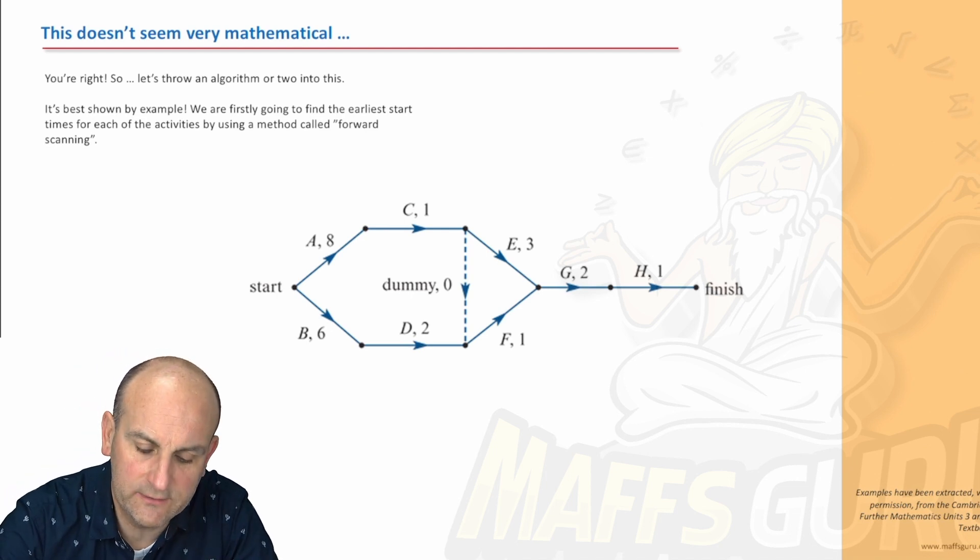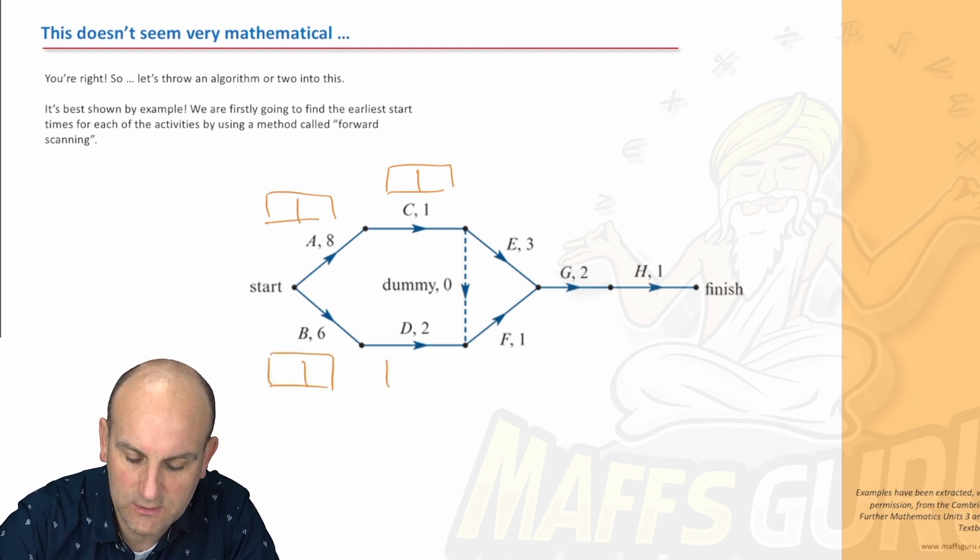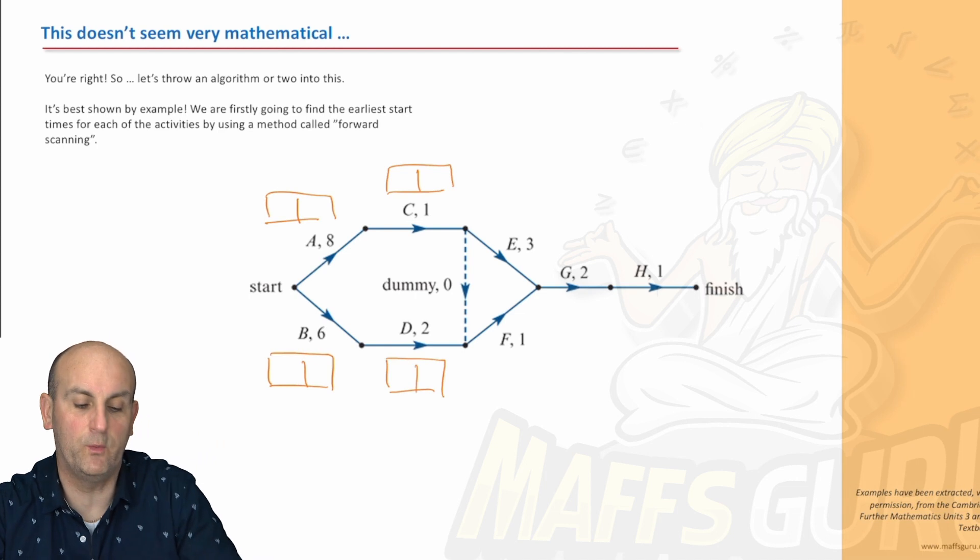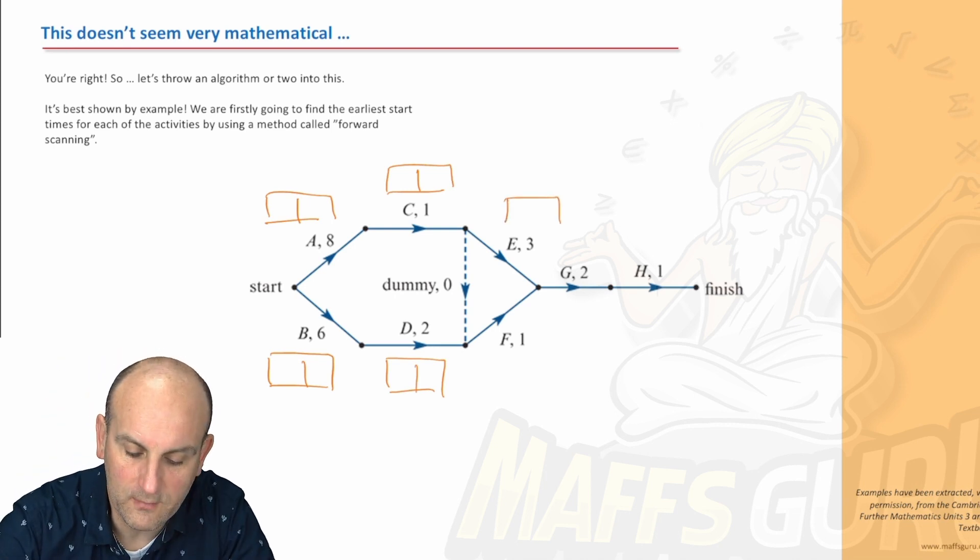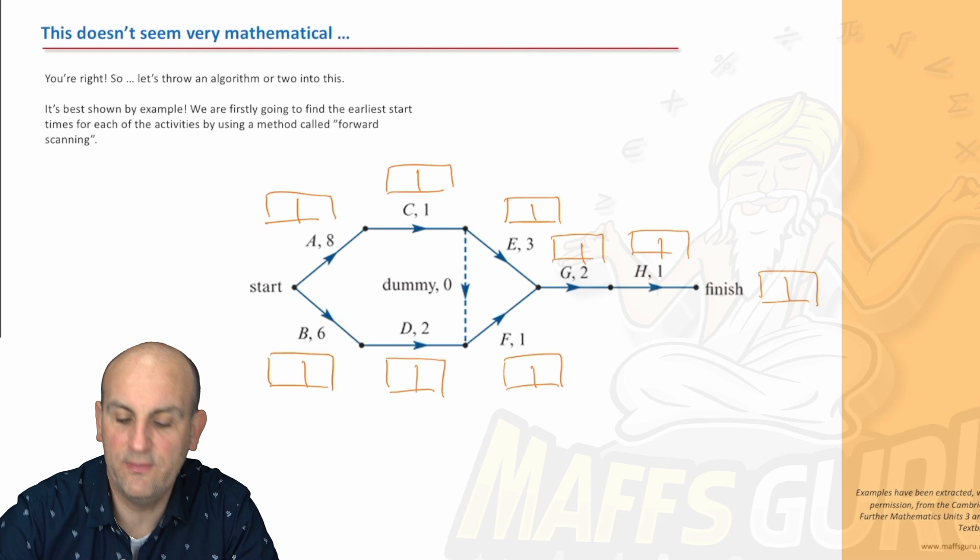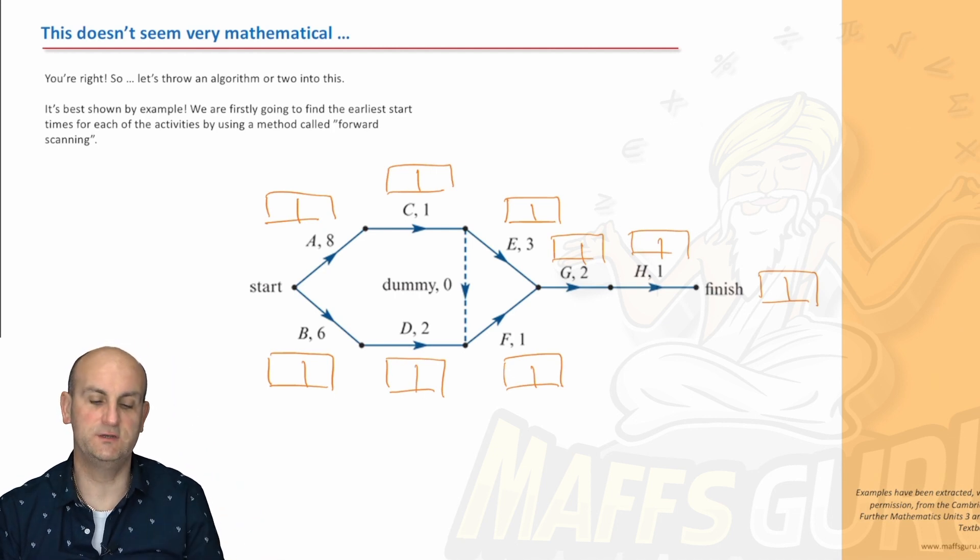So when you do these things, you basically need to put a rectangle above each of the activities you are completing. So what you notice is I put one above A, one above C, one below B, one below D. Don't worry about the dummy for the moment. One above E, one by F, one by G, one by H, and then one at the finish. And I'll explain the finish in a moment.